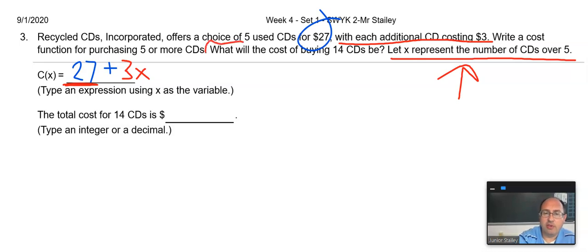So, when you get to this part of the question, what will the cost of buying 14 CDs? What will the cost of buying 14 actually be? A lot of people just put 14 in the equation. Well, they immediately end up losing on that particular question because they're not paying attention to what X is.